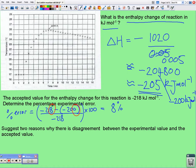Okay, now, suggest reasons, it says two reasons, why there's a disagreement between the experimental value and the accepted value. And there's all kinds of things. Of course, the major reason, the major error is the heat lost to the surroundings.